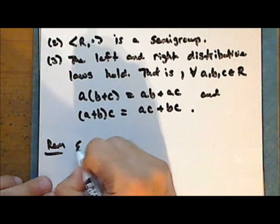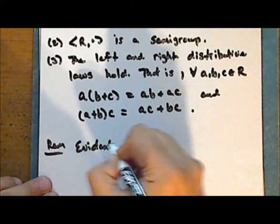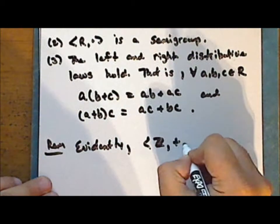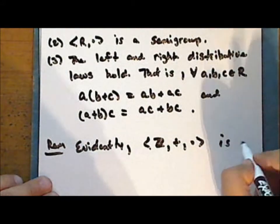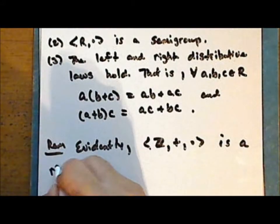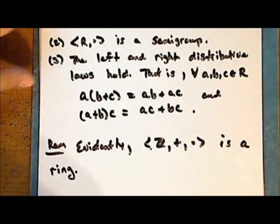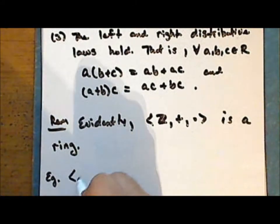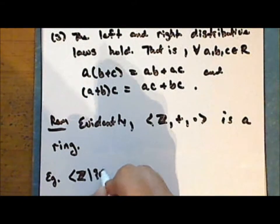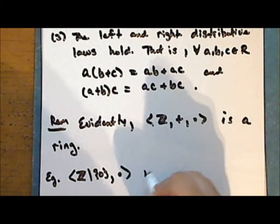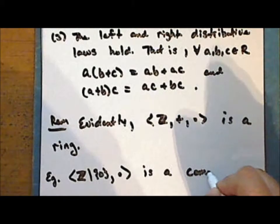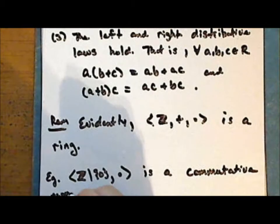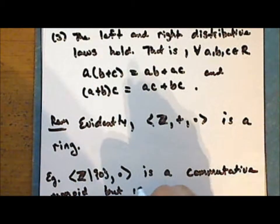So evidently, the integers together with normal addition and normal multiplication is a ring. Next we will show that the non-zero integers under multiplication is a commutative monoid but is not a group.